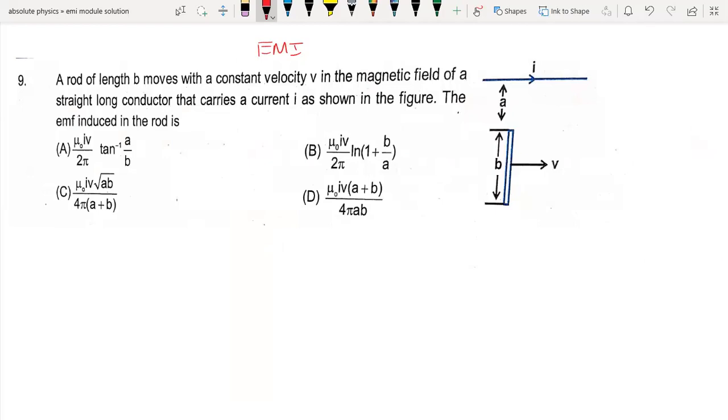Hello all my viewers, today I'm going to take this question from chapter EMI. The question is: a rod of length b moves with uniform velocity in a magnetic field of a straight long conductor that carries current I. The EMF induced in the rod is...